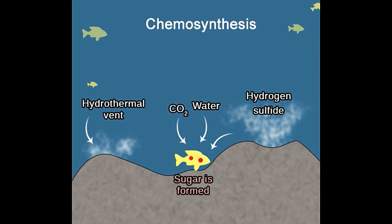Where it occurs: Photosynthesis usually occurs above sea level, but also takes place in plants that are up to 100 meters deep in the ocean. The leaves are the main site where photosynthesis occurs. Chemosynthesis occurs thousands of meters deep in the sea, at the sea floor or the ocean basin, usually in close proximity of hydrothermal vents that contain high amounts of hydrogen sulfide. These hydrogen sulfide bonds are broken down to obtain energy.